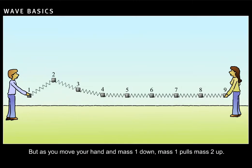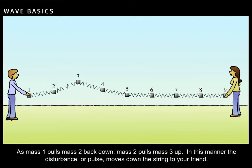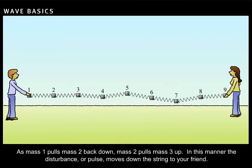But as you move your hand and mass 1 down, mass 1 pulls mass 2 up. As mass 1 pulls mass 2 back down, mass 2 pulls mass 3 up. In this manner, the disturbance, or pulse, moves down the string to your friend.